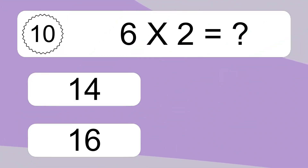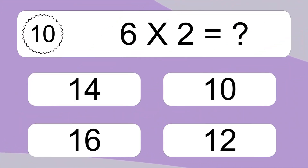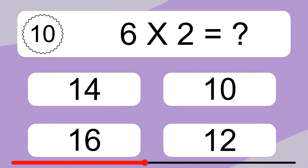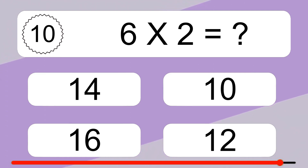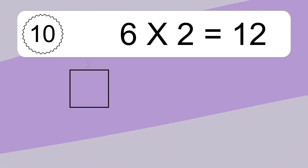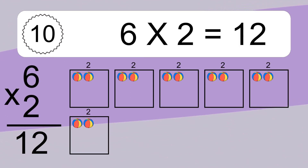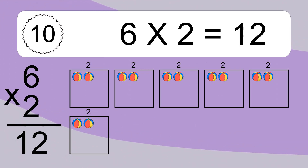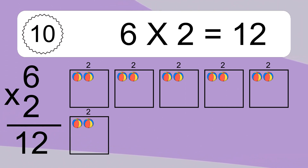Six times two equals what? Six times two equals twelve. We have six boxes, and each box has two colorful balls inside. If you count all the balls in all the boxes together, you will have six times two balls. This equals twelve balls.